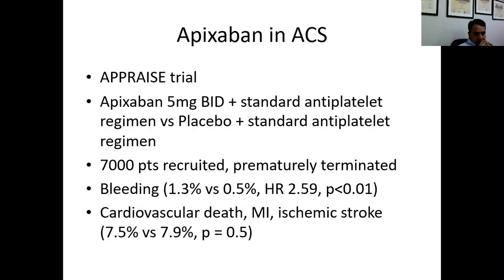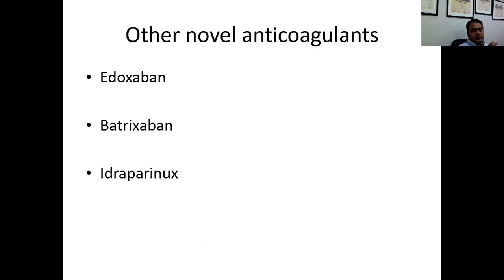In acute coronary syndrome, the APPRAISE trial was a negative trial. Apixaban 5 mg twice daily along with standard antiplatelet therapy was compared to placebo plus standard antiplatelet therapy. Seven thousand patients were recruited, but the study was prematurely terminated due to a higher risk of bleeding — 1.3% versus 0.5% — which was statistically significant. This trial did not pan out well in the acute coronary syndrome setting.